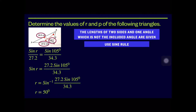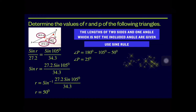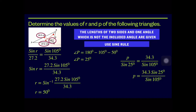Before finding the length of p, we need angle P = 180° − 105° − 50° = 25°. After finding angle P, we apply the sine rule: p/sin 25° = 34.3/sin 105°. Therefore, the length of p is equal to 15.01 centimeters.